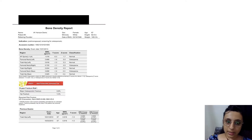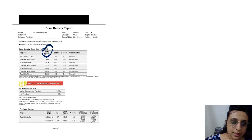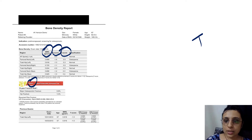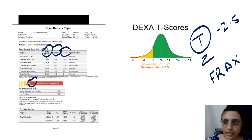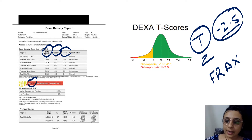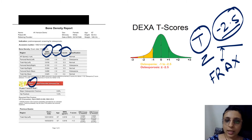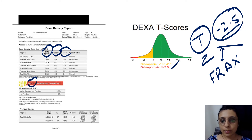The bone mineral density report includes T-score, Z-score, and FRAX. The T-score represents standard deviations below the normal mean of a healthy young adult. A T-score less than minus 2.5 is osteoporosis, while from minus 1 to minus 2.5 is osteopenia.